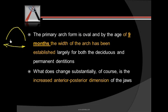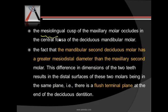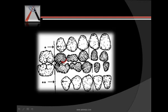Most of the change that happens after nine months is in the posterior dimension rather than in the width of the arch. When talking about the deciduous teeth, the mesialingual cusp of the maxillary molars occurs in the central fossa of the deciduous mandibular molars. Because the deciduous mandibular molar has more mesiodistal diameter than the maxillary second molar, what we get is a flush terminal plane.